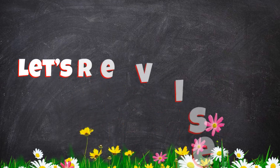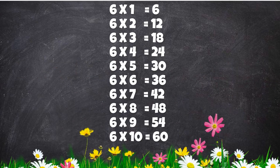Let's revise the table. 6 times 1 is 6. 6 times 2 is 12. 6 times 3 is 18. 6 times 4 is 24. 6 times 5 is 30. 6 times 6 is 36. 6 times 7 is 42. 6 times 8 is 48. 6 times 9 is 54. 6 times 10 is 60.